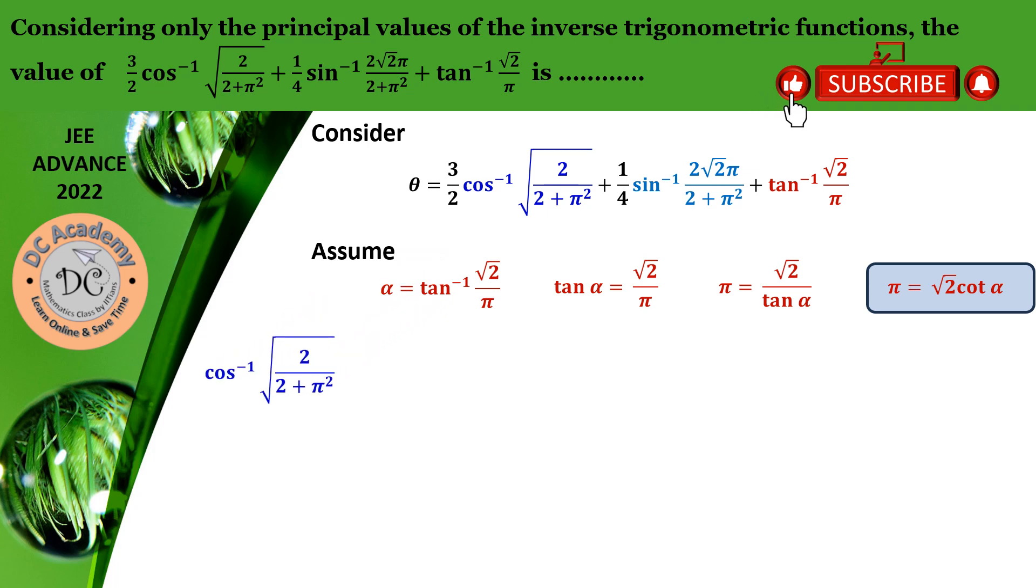We consider the first term, that is cos inverse of 2 by 2 plus pi squared. Now we have that pi equals root 2 cot alpha, so let's substitute that particular value. We get it as cos inverse of 2 divided by 2 plus 2 cot squared alpha. The 2s get cancelled and we get cos inverse of 1 by 1 plus cot squared alpha.